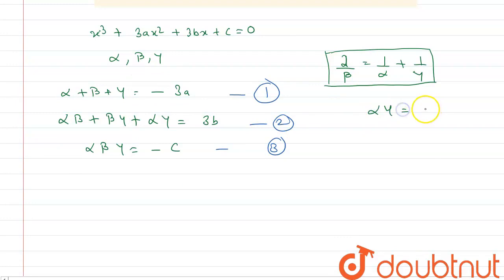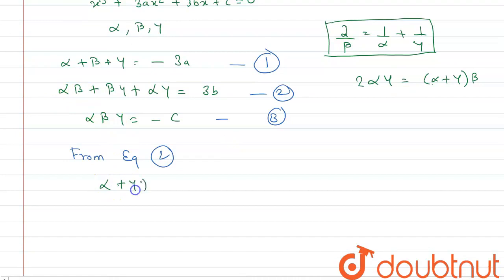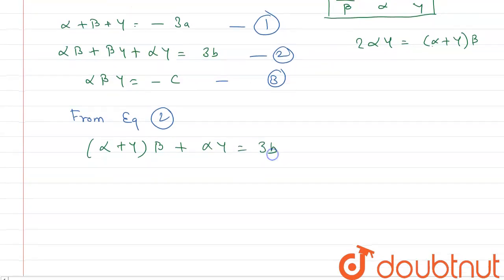From the HP condition, αγ = (α + γ)·β/2. Substituting into the sum-of-products expression, we get αβ + βγ + αγ = (α + γ)β + αγ = 2αγ + αγ = 3αγ = 3b. Therefore αγ = b.